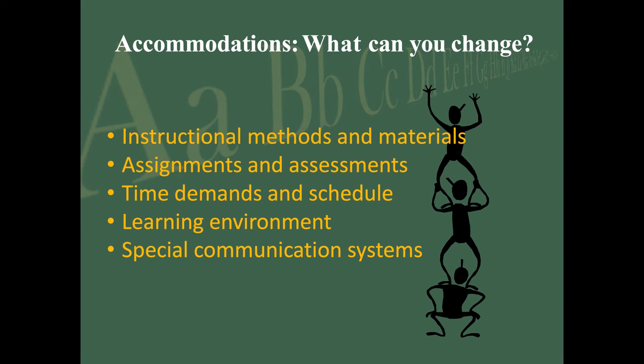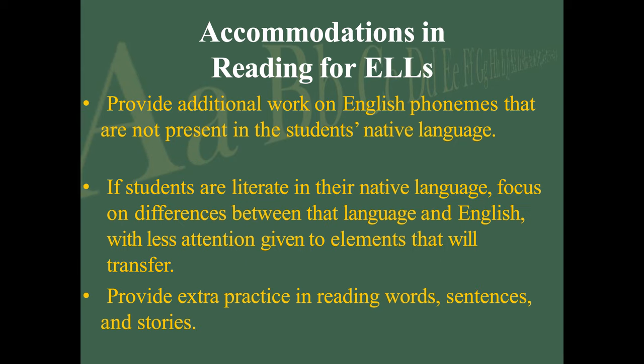Accommodations in reading for English learners include lots of explicit instruction — more than native English speakers will receive — on those English phonemes not present in their first language. The biggest example is the B/V sound: the V sound is not present in Spanish, so kids often substitute B for V and might say something like 'I am having a bery good time.' If students are literate in their native language, focus on differences between that language and English, with less attention given to elements that will transfer.